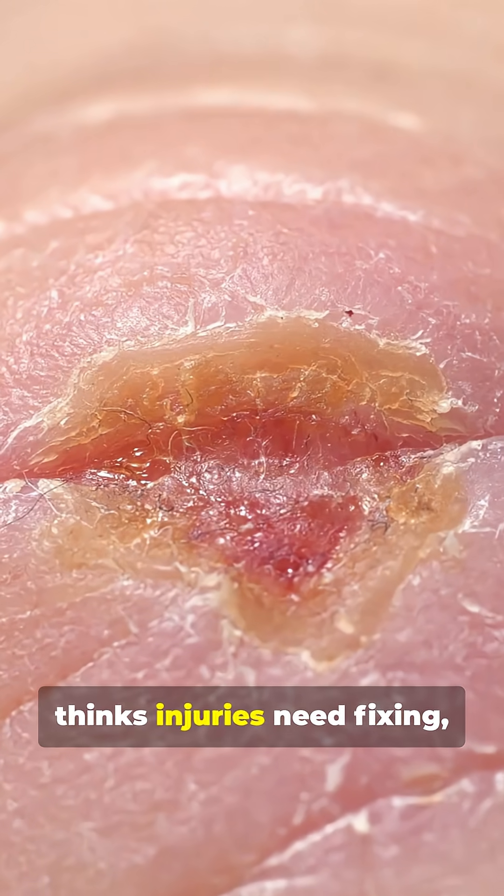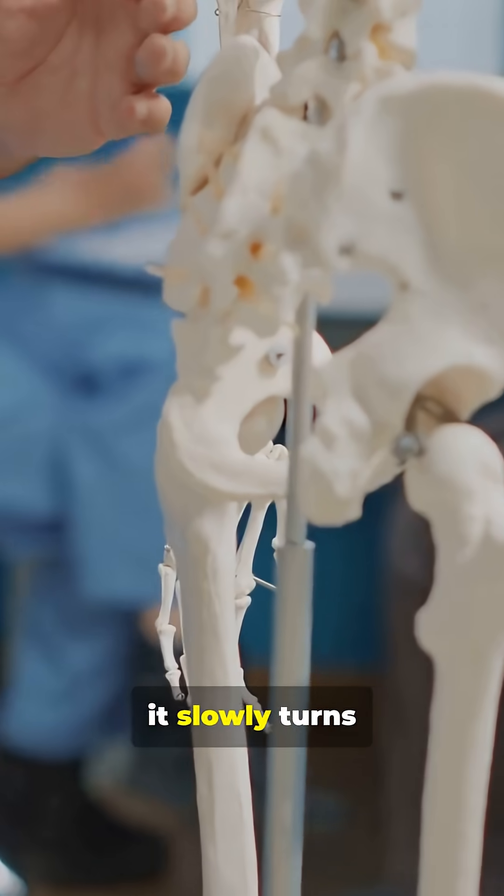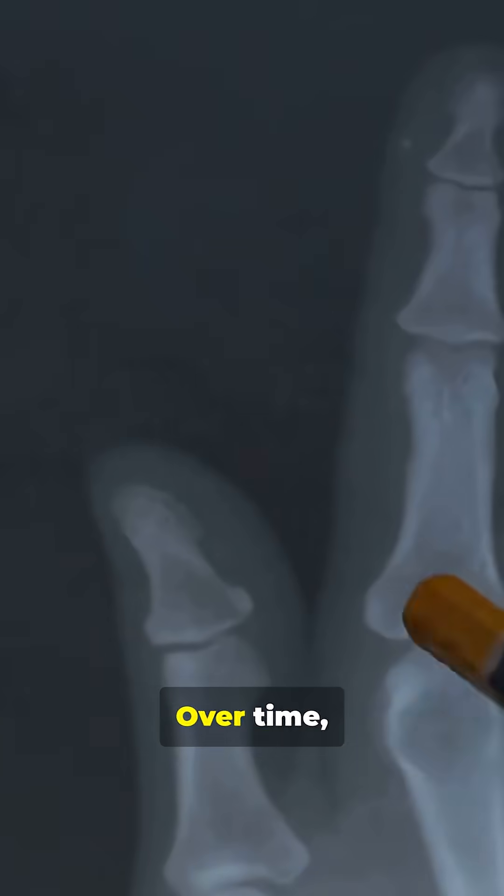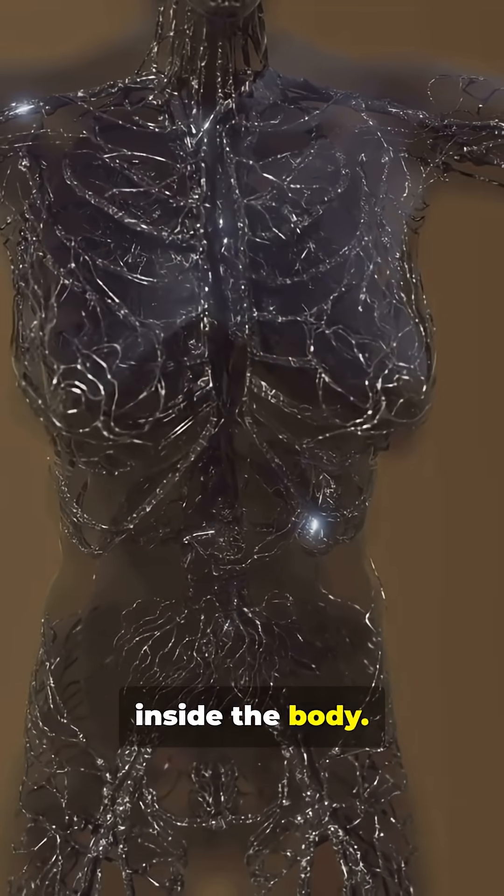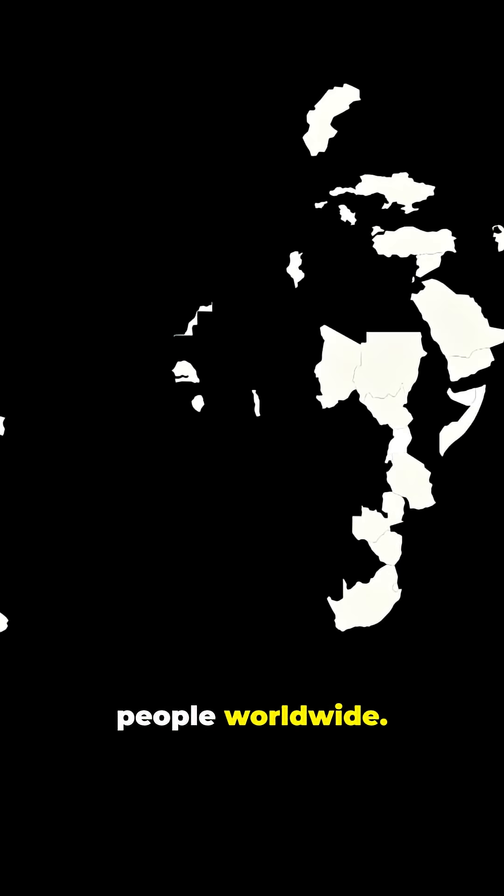Your body thinks injuries need fixing, so instead of healing muscle, it slowly turns them into bone. Over time, joints lock up, movement disappears, and a second skeleton forms inside the body. FOP affects about 1 in 2 million people worldwide.